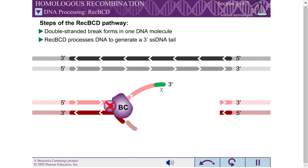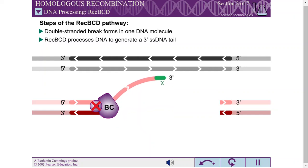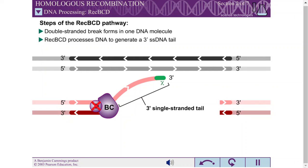Beyond the chi-site, REC-BCD no longer cleaves the DNA from 3' to 5'. However, the 5' to 3' nuclease activity of REC-BCD increases. This results in a 3' single-stranded tail on the DNA, terminating in the chi-sequence.